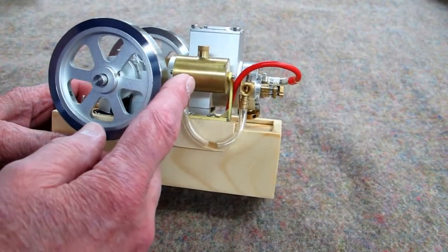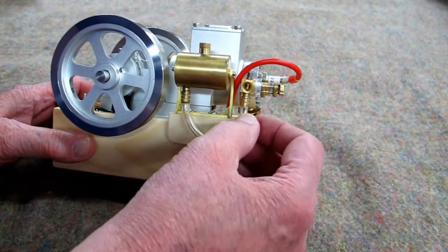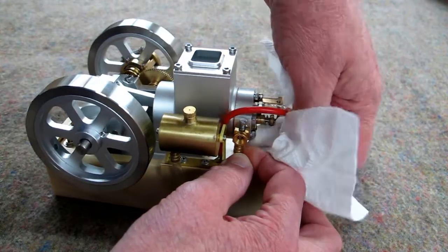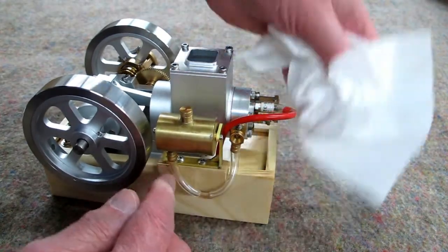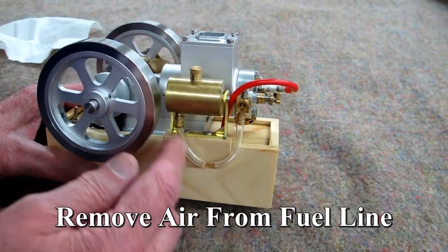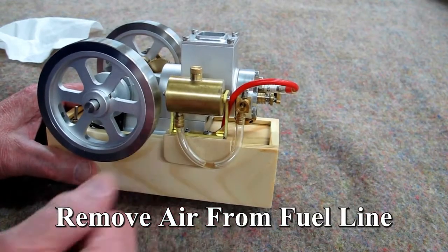When you put fuel in this, you want to pull this fuel line off and pinch it. Get a paper towel and let that run until you get all the air bubbles out of this line and put it back on again. If you see an air bubble like this in here, it's not going to run.